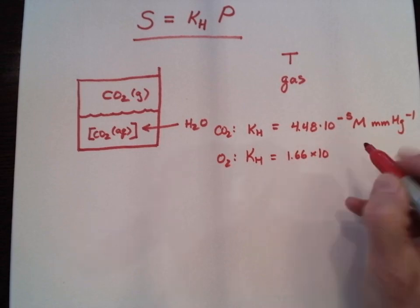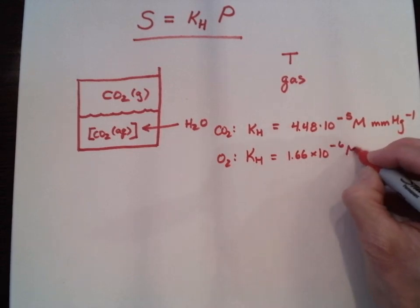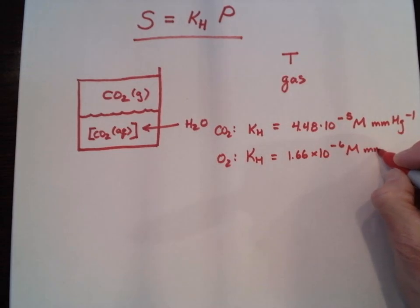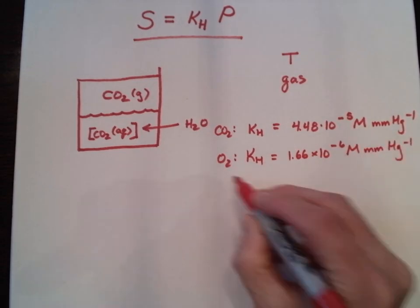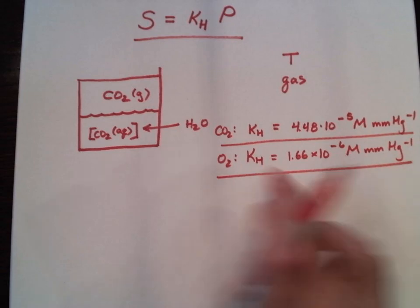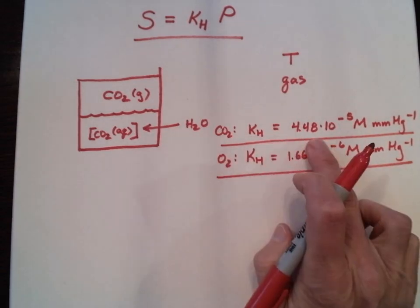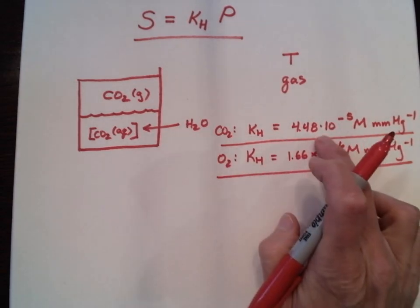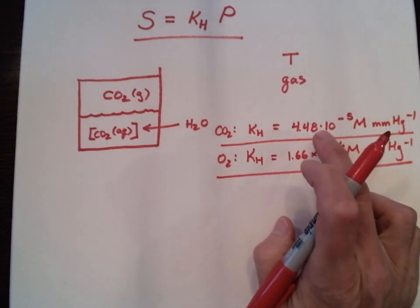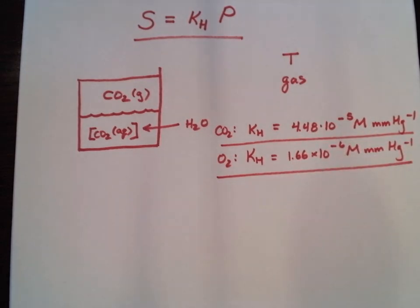With this, we see that carbon dioxide is going to be much more soluble in water — over 10 times more soluble, about 20 to 40 times more soluble than oxygen.